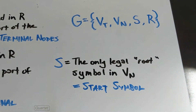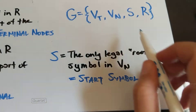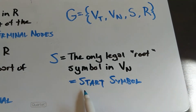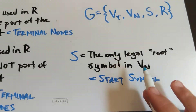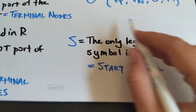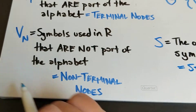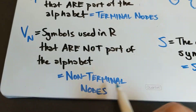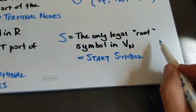S is the first gear you go through — the first station inside your machine. We call this the start symbol or the root node, which is the one that goes at the top. You have to specify which out of this set of states that you're going to go through is going to be the one you start with.